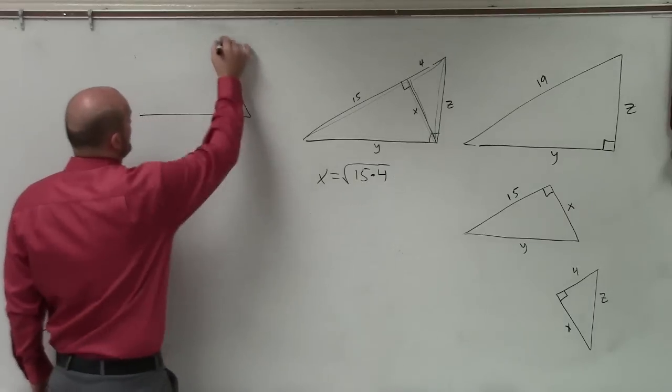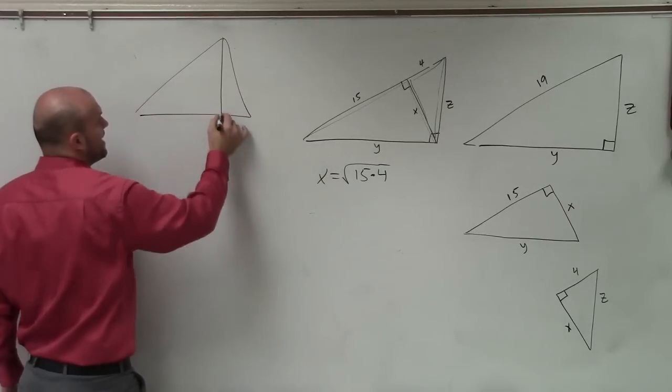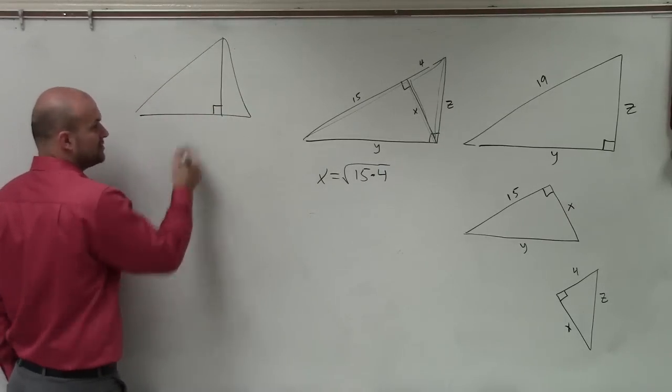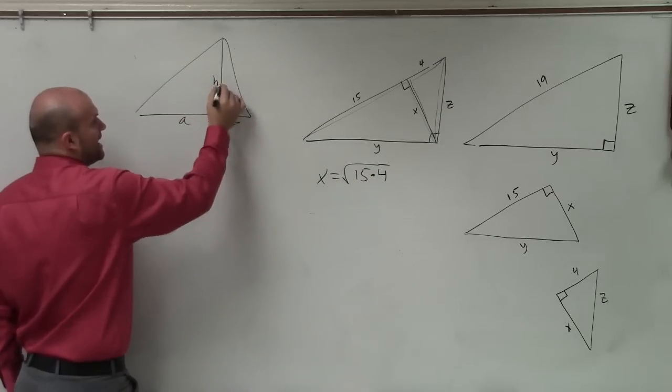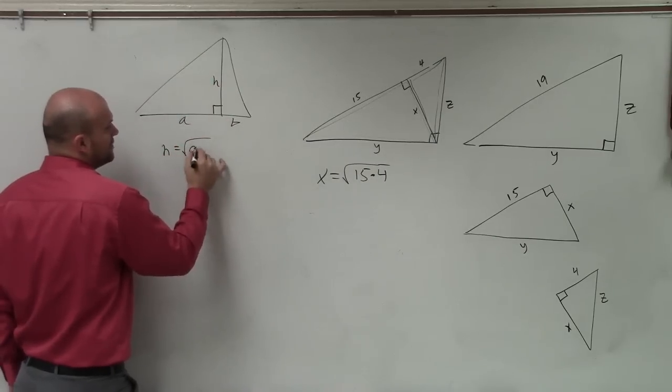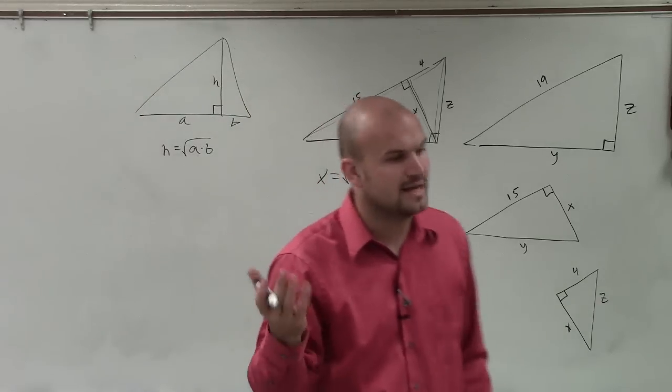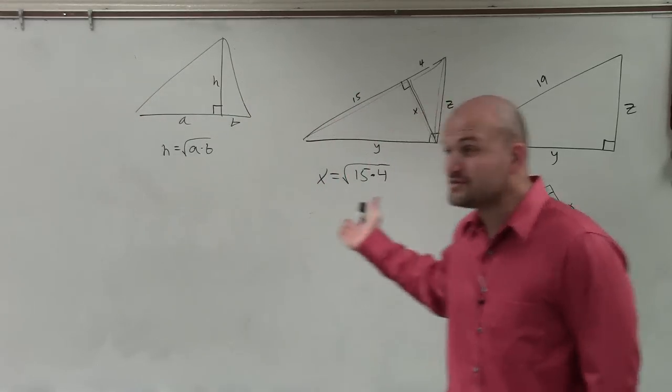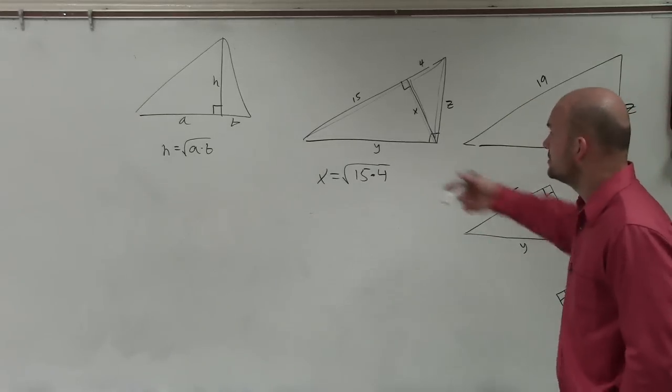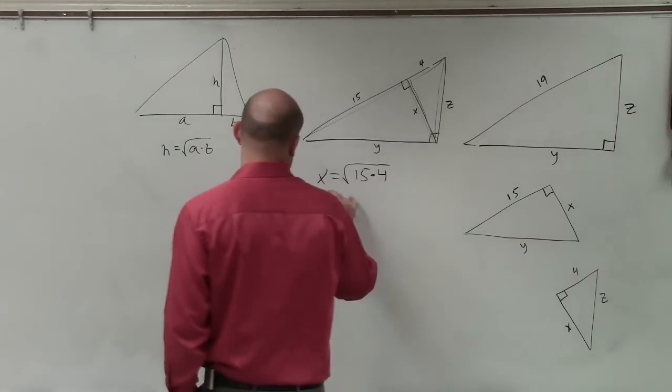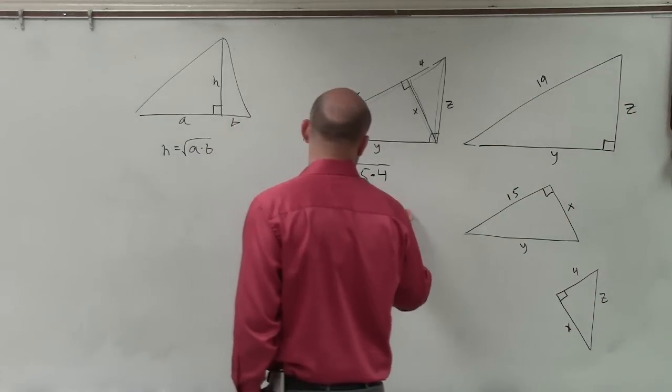This one's pretty basic to remember whenever you have a triangle. This is one thing that we did in our notes. Whenever you have a triangle and you find the altitude, the altitude is equal to the square root of a times b. Or the height, the altitude, whatever you want to call it. So for this, that one's pretty easy for me to remember. So now I can simplify this. So x equals 2 square root of 15.